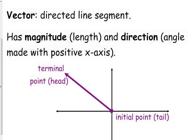And then the terminal point is wherever the vector ends up. In this case, it's in the second quadrant. So we've got, this is its magnitude.